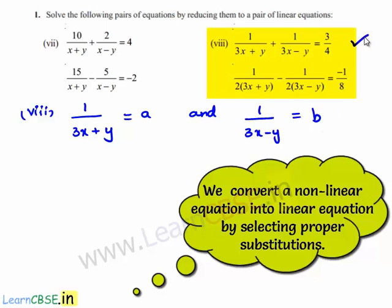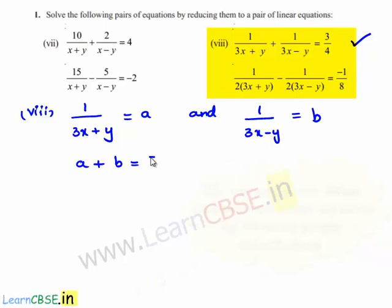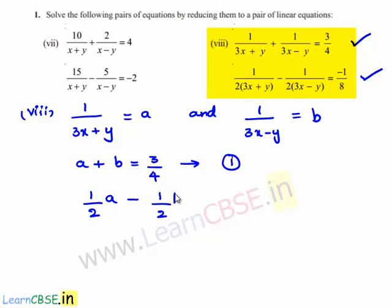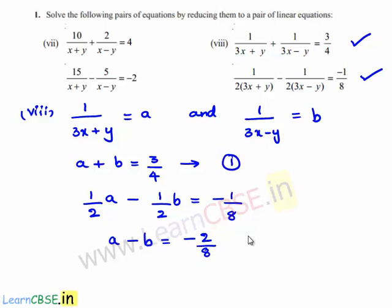With this substitution, the first equation changes to a + b = 3/4 — assume this as equation 1. The second equation changes to (1/2)a - (1/2)b = -1/8, which simplifies to a - b = -1/4. Assume this as equation 2.